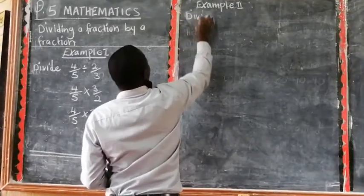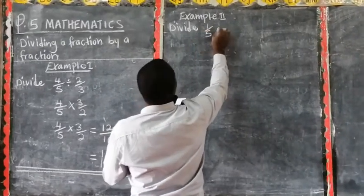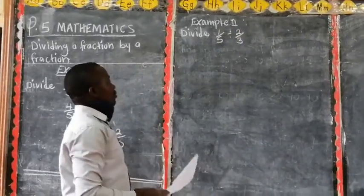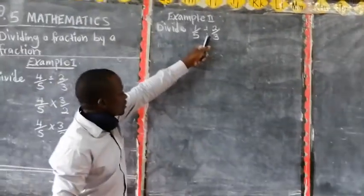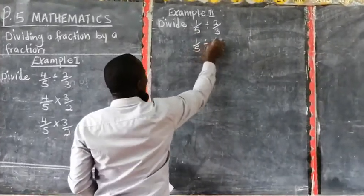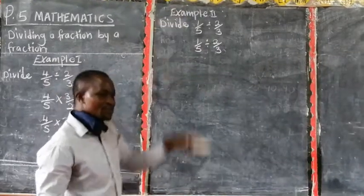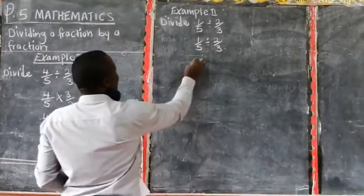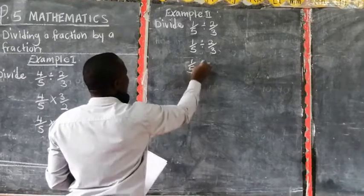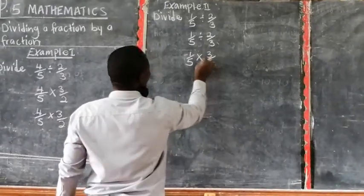So example 2 says divide 1 out of 5 by 2 out of 3. So we say that when you are dividing a fraction by a fraction, this division sign here, it changes to multiplication sign. And once it changes, you also find that reciprocal. And we say that reciprocal, the number is down goes up, and the number is up comes down. Therefore, here we are going to have 1 out of 5, and the reciprocal of 2 out of 3 is 3 out of 2.